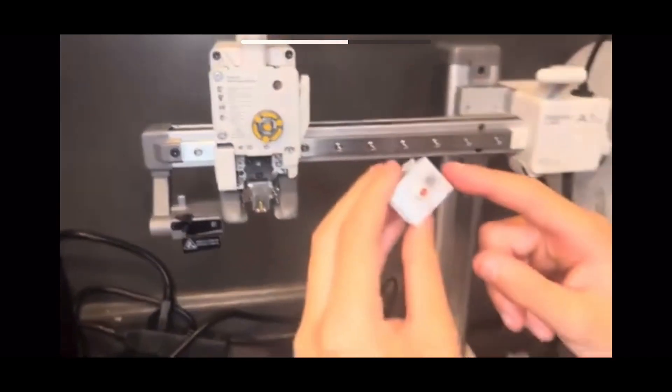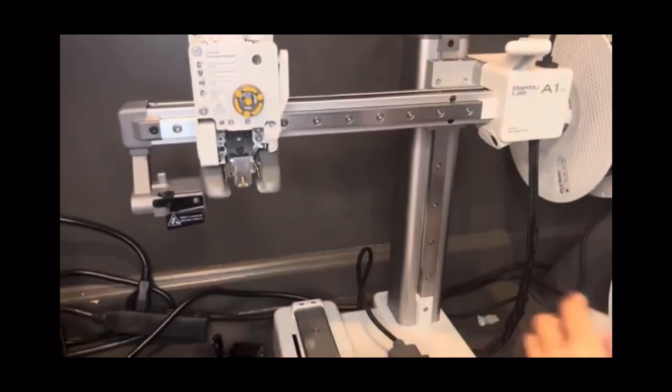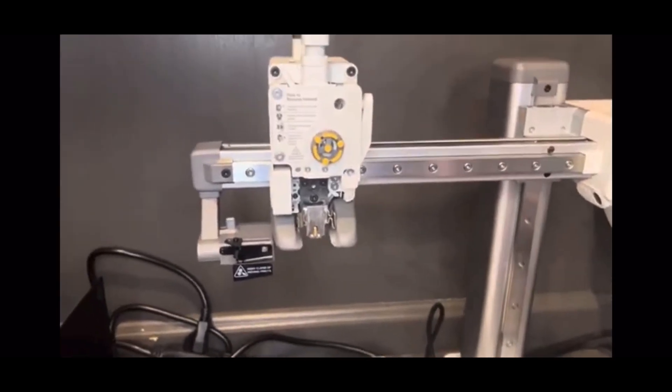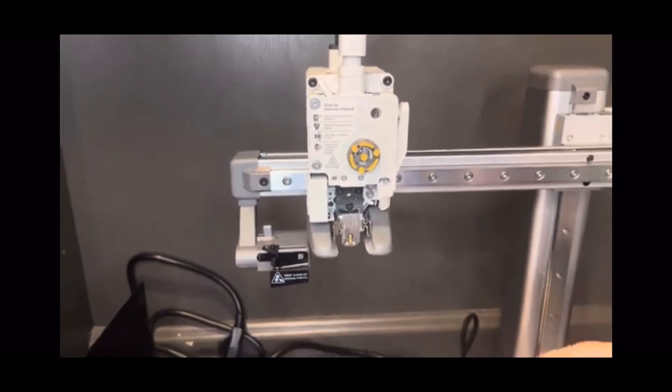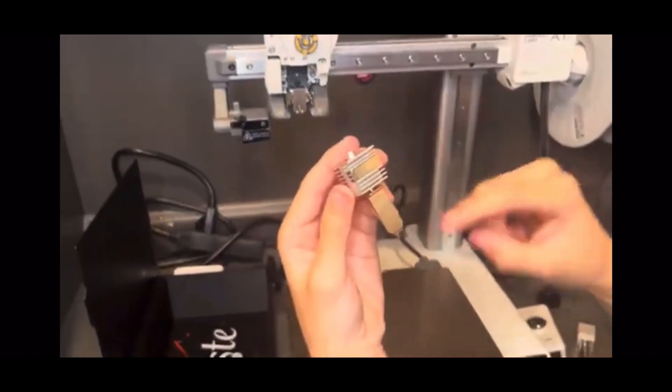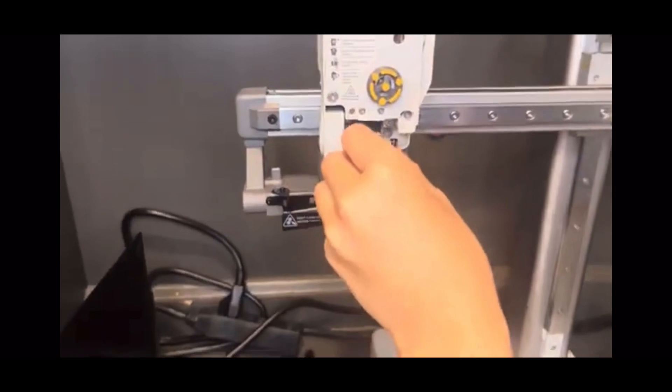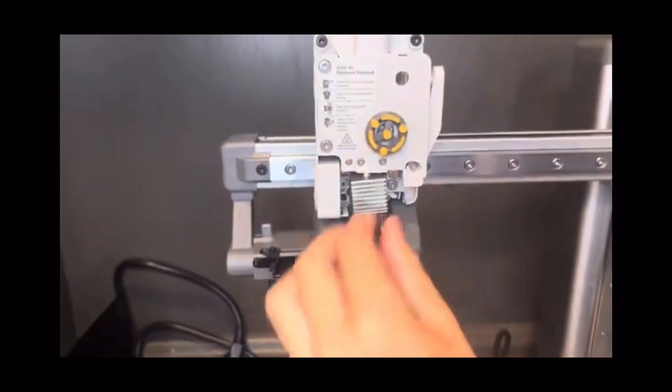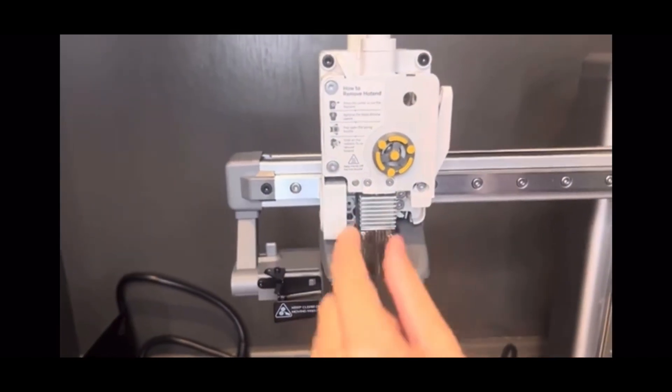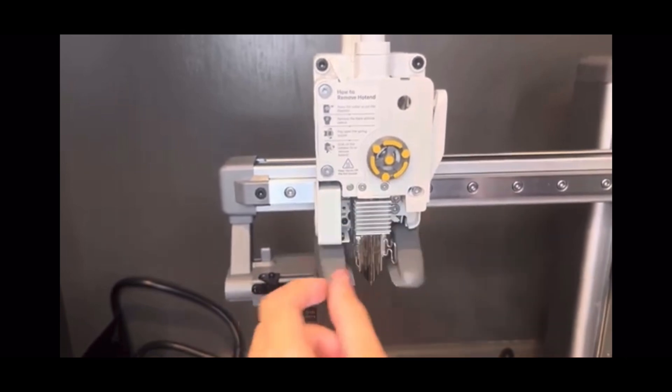Then you're just going to pull the nozzle out from the top. There's going to be filament in here that you don't really need to do anything with. You just cut that or take it out. We're going to get our new nozzle. Make sure this flat part is going back. There's a magnet in here that it's going to clip in.